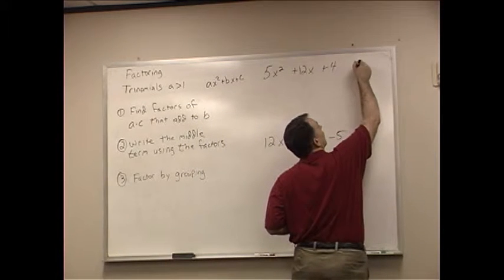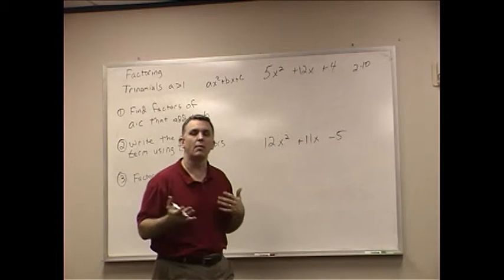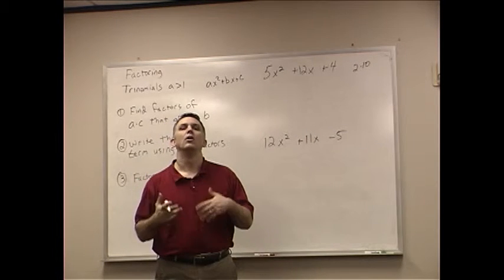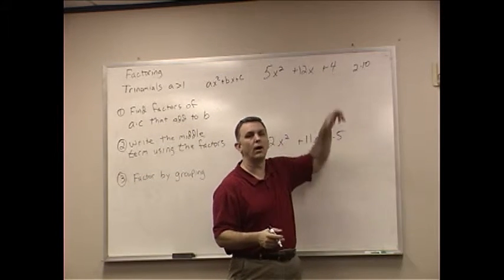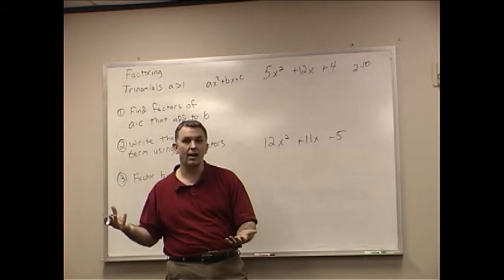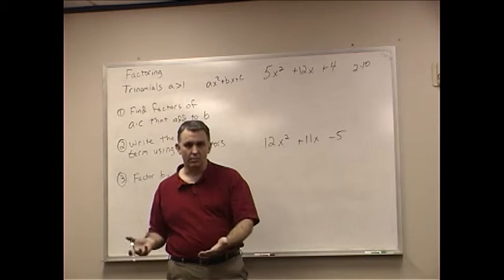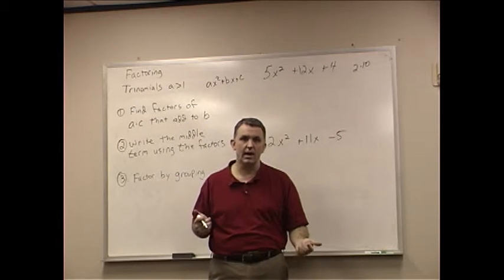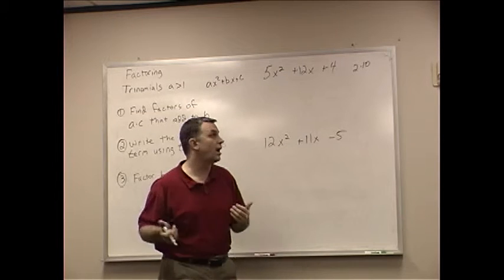Hopefully you'll work your way through, and eventually you'll come up with 2 times 10. 2 times 10 multiplies to be 20. Now, I know some of you are going crazy, but 2 times 10 is not 4. We're not doing it just for the C. Now we're doing it for A times C. It's 5 times 4. Multiplies to be 20. Adds to be the middle term, which is 12.